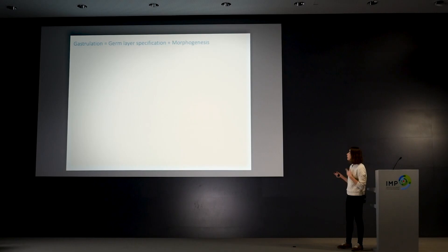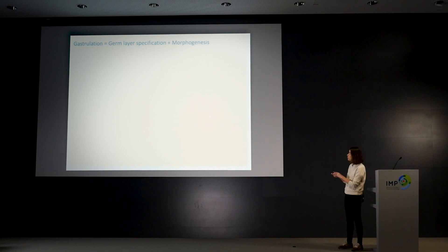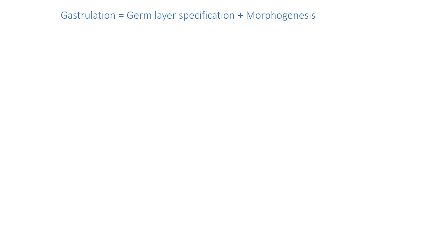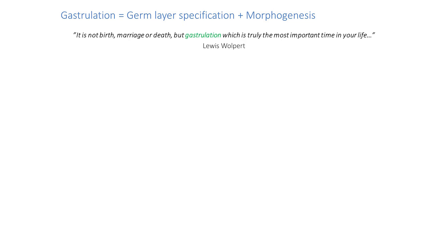Now that we have a clear question and a model system, we also need to choose a process. During the start of my postdoc I chose to study gastrulation, because it's the first instance during development where tissue specification — tissues acquiring different fates — occurs in parallel with large-scale morphogenetic movements. As Lewis Wolpert beautifully put it, it's not birth, marriage, or death that is truly the most important moment of your life, but really gastrulation — so that you can have a life.